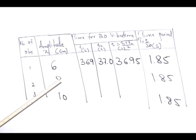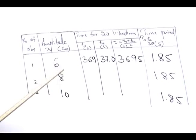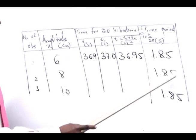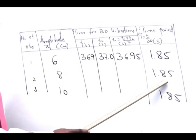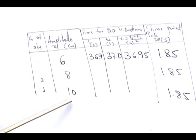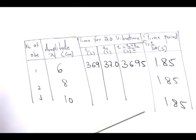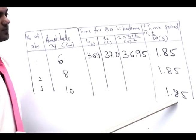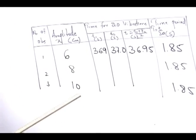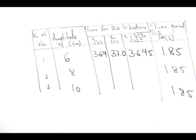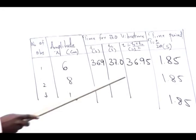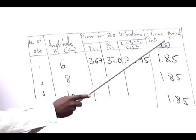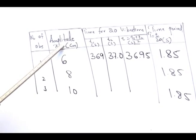For the second observation, we used an amplitude of 8 centimeters and calculated the time period — again 1.85 seconds. For the third observation, the amplitude was 10 centimeters, and following the same procedure, the time period was once again 1.85 seconds. From this table, we can see that when the amplitude changes, the time period remains unchanged — confirming that the time period of a simple pendulum is independent of its amplitude.